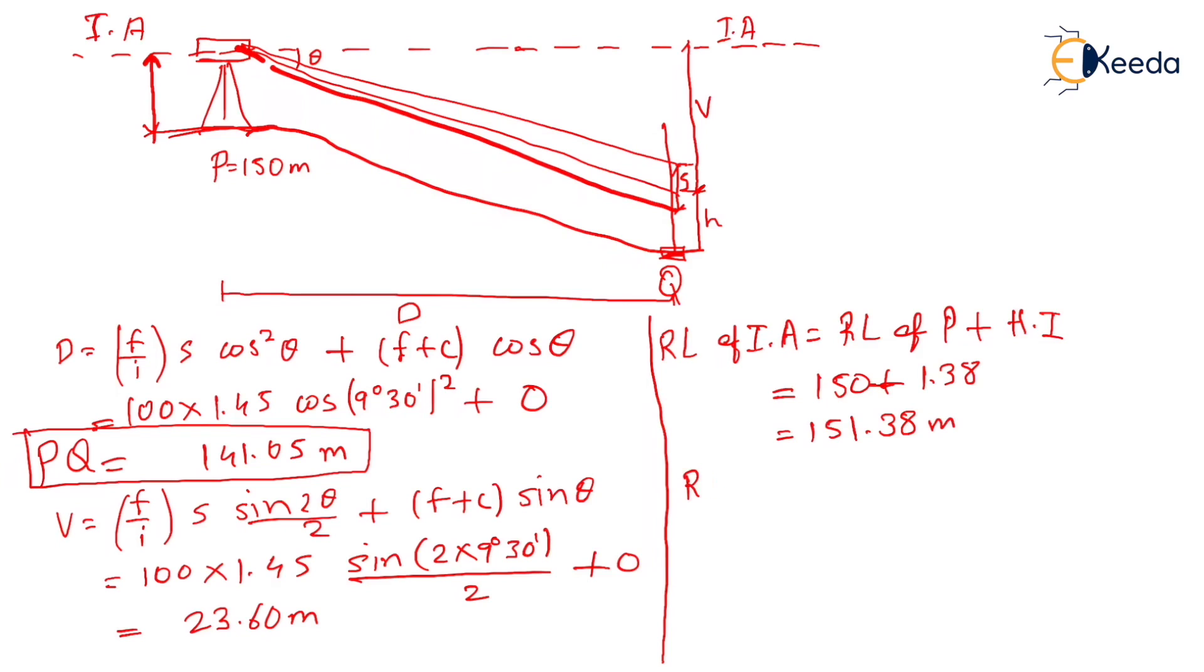So RL of Q can be determined by subtracting V and then again subtracting h. So RL of Q will be: RL of instrument axis minus V minus h, as we have depression angle, so that will be minus V.